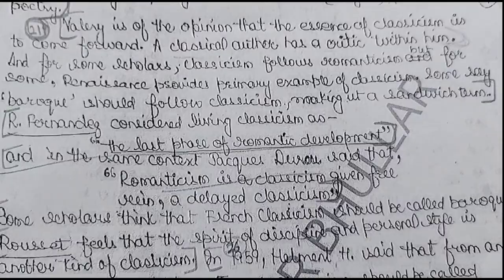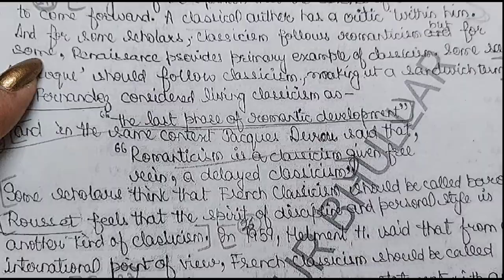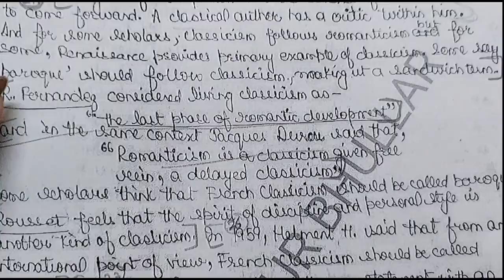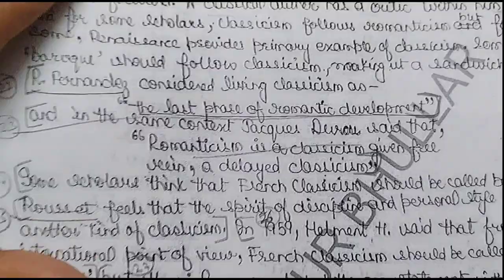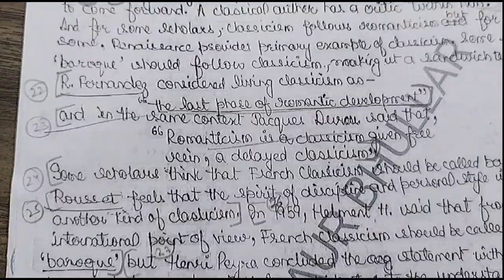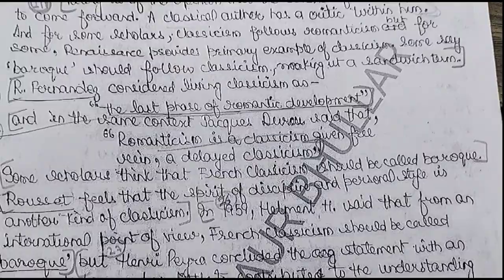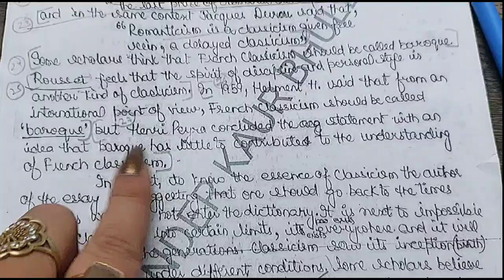Valery is of the opinion that the main essence of classicism is to come forward — classicism means to come forward. A classical author has a critic within him. Classicism follows romanticism, but for some, the Renaissance provides the primary example of classicism. Some say Baroque should follow — Baroque style means to come from the world of half-cut pearls, over-decoration or over-decorative language.